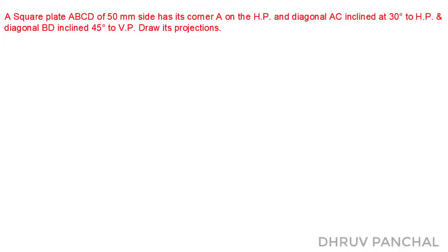Hello friends, in engineering drawing subject, today we are going to learn projection of planes, in which we will learn how to draw the projection of a plane when the plane is inclined to both the horizontal plane as well as the vertical plane. Here is our data for the problem: a square plate ABCD of 50 millimeter side has its corner A on the horizontal plane, diagonal AC is inclined at 30 degrees to the horizontal plane, and diagonal BD is inclined at 45 degrees to the vertical plane. Draw its projections.